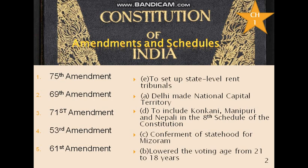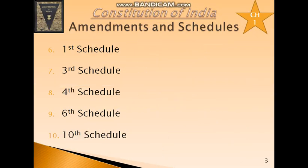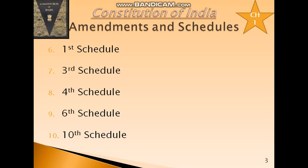The 61st Amendment lowered the voting age from 21 years to 18 years. Now let's see the important schedules.